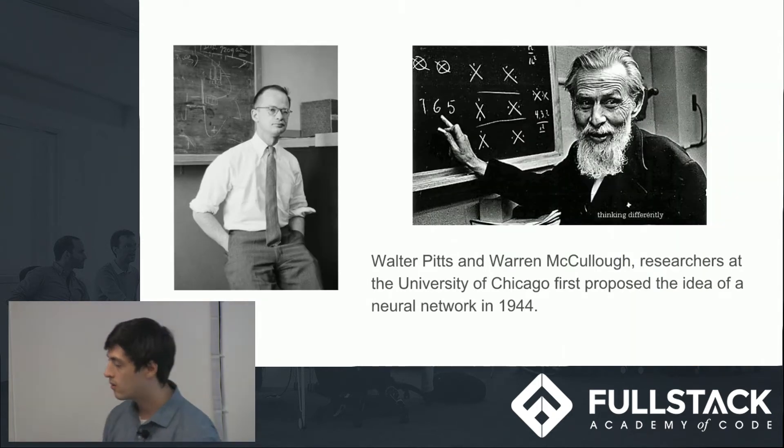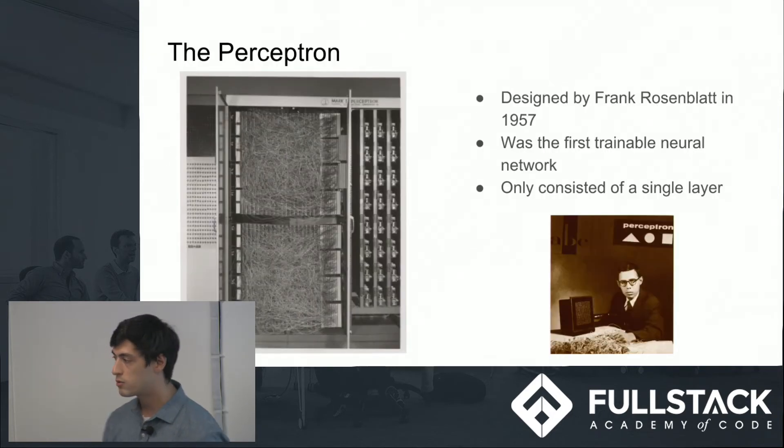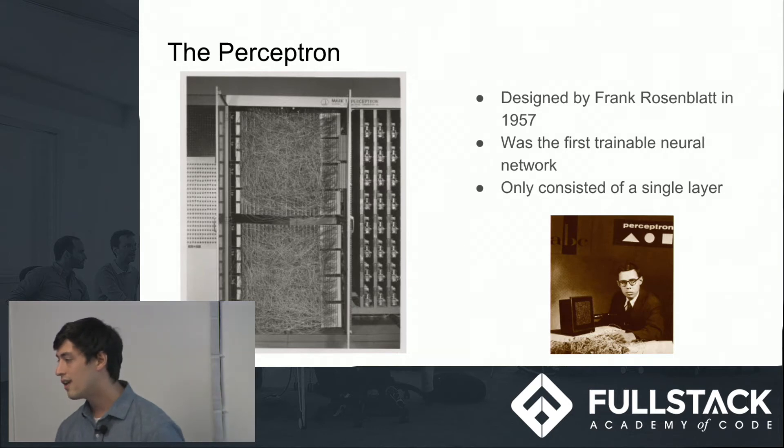Walter Pitts and Warren McCullough, researchers at the University of Chicago, were the first people to develop this idea of a neural network in 1944, a way for machines to behave like a brain. They didn't implement one, however.